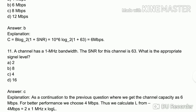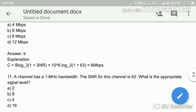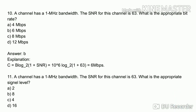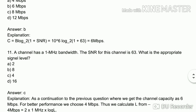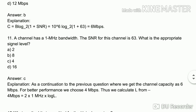Eleventh question: the channel has 1 Mbps bandwidth and SNR is 63. What is the appropriate signal level? We calculate the bit rate using the Nyquist formula: R = 2B log₂(L). Applying 2 × 1 Mbps × log₂(L), and using the values, the answer is C — 4 signal levels.